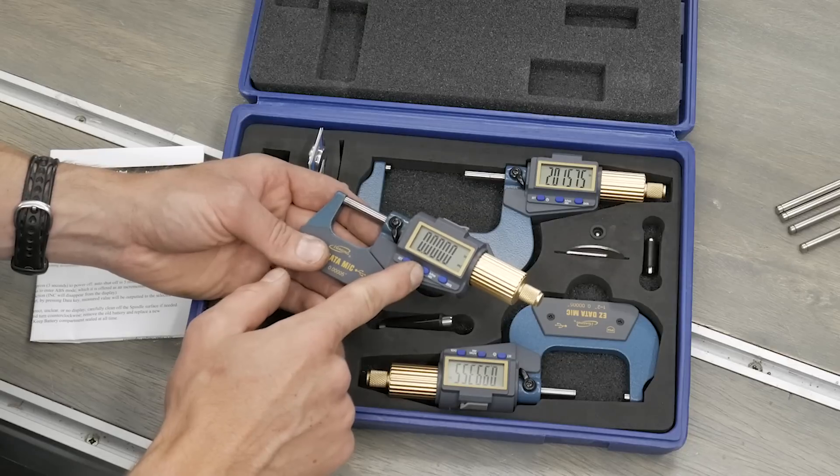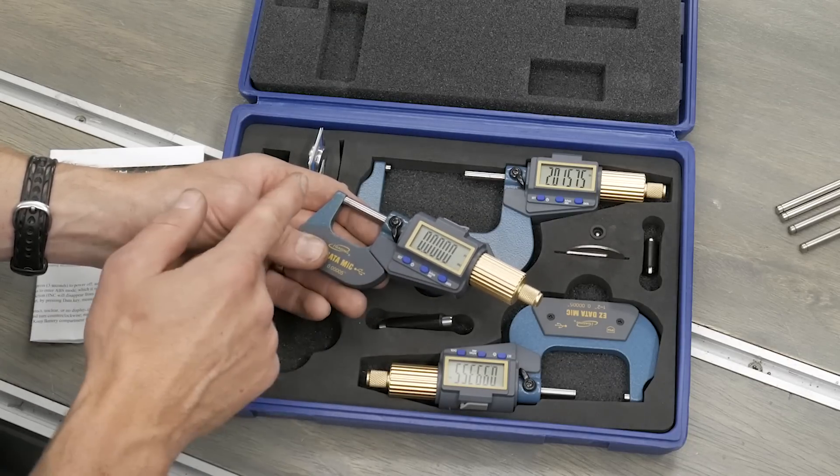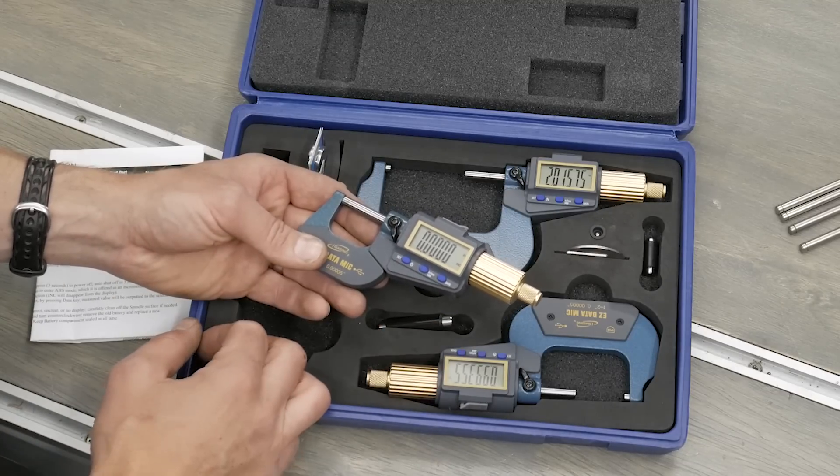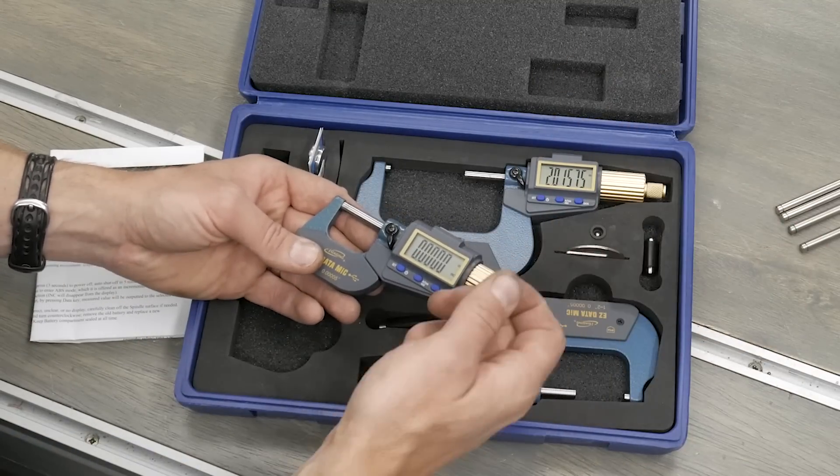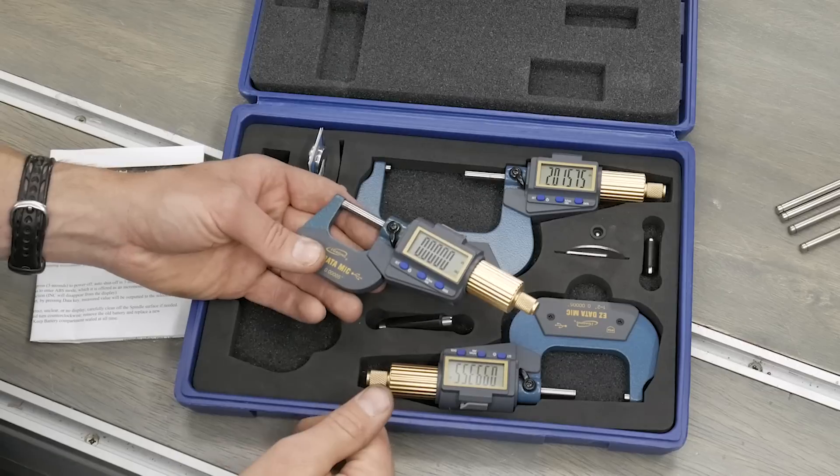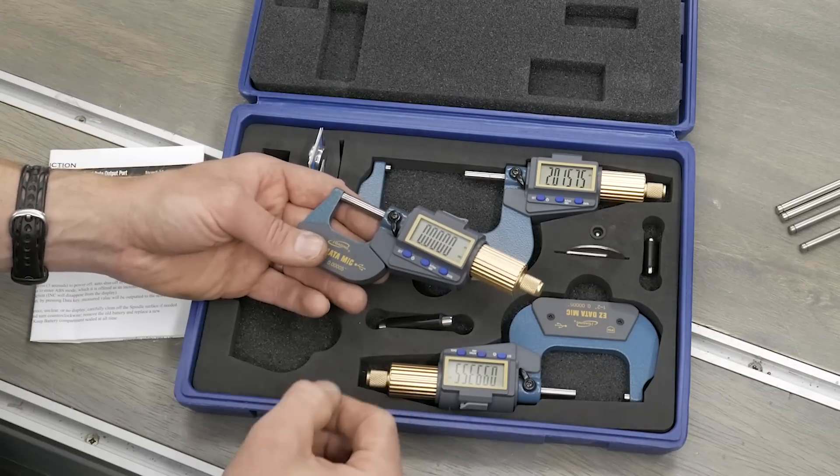It has metric and inch, and you can also switch between absolute, which would be the actual measurement, or relative measurement, which you could say take a measurement, set it at 0 on one part, and then compare subsequent parts to that particular measurement with a delta of 0 or negative or positive.